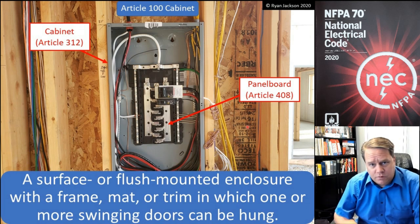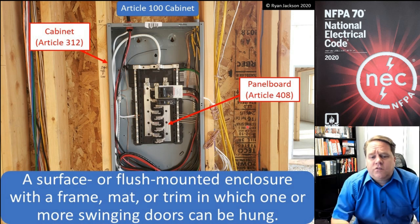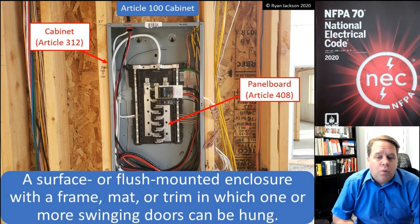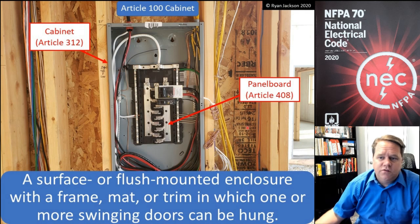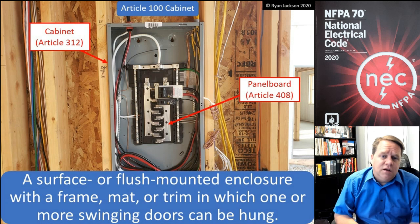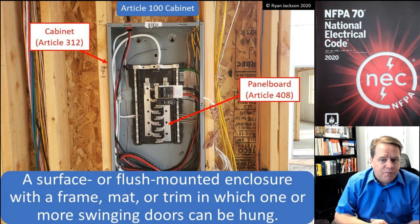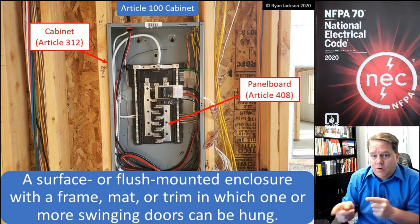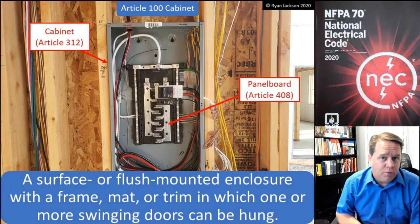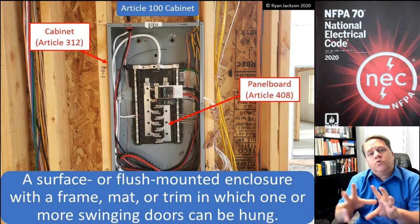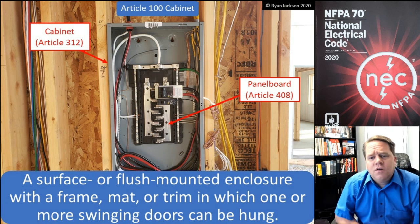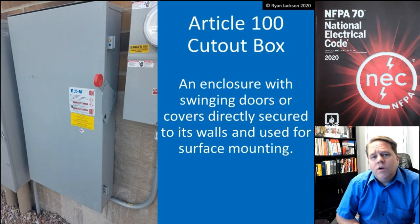A cabinet is a surface or flush-mounted enclosure with a frame, mat, or trim in which one or more swinging doors can be hung. The most common type is the one we install a panel board in, but there's nothing that says you can only put a panel board in a cabinet. Industrial control panels are usually assembled inside of a cabinet — we have the swinging door and the cabinet enclosure.